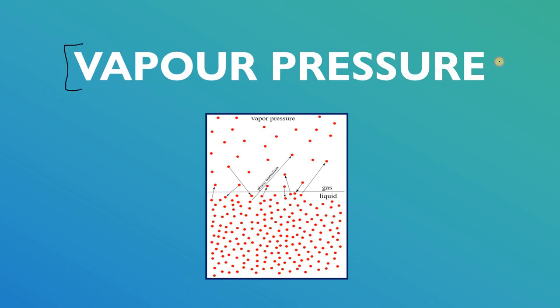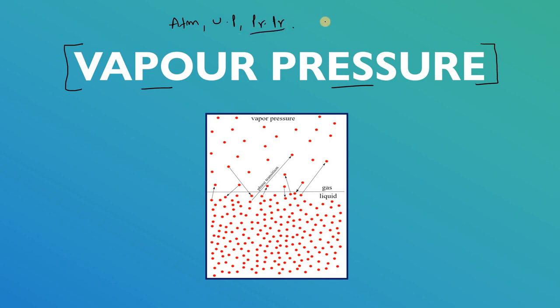Hello everyone, in this video we are going to discuss one of the basic but most important terms — vapor pressure. I have seen that sometimes students, and even engineers and graduates, get confused between vapor pressure, atmospheric pressure, vacuum pressure, and partial pressure. There are many other pressure parameters we must know about.